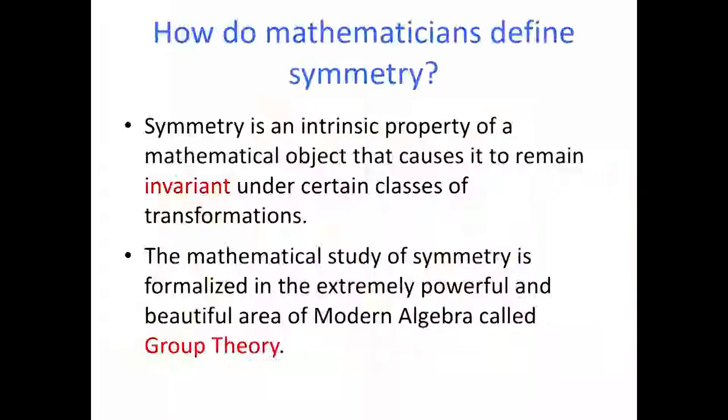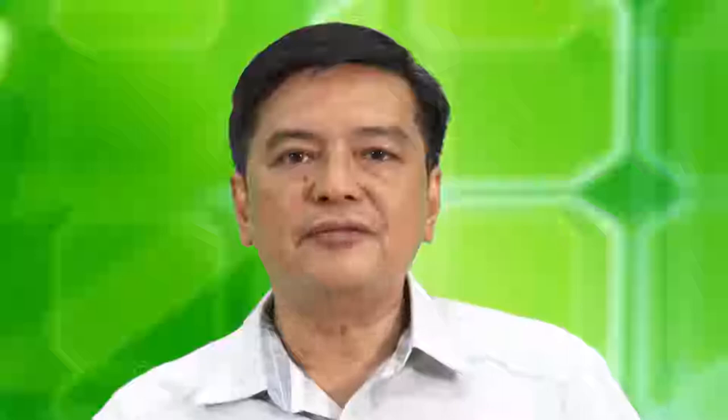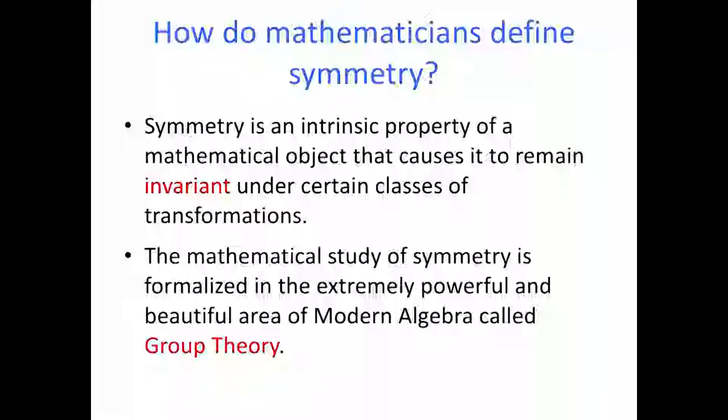But mathematicians define symmetry in a more technical or precise way. Symmetry is an intrinsic property of a mathematical object that causes it to remain invariant under certain classes of transformations. So when you see a picture that's symmetric, it's because a certain transformation — for instance a reflection — leaves the picture exactly the same as the original. The mathematical study of symmetry is formalized in the extremely powerful and beautiful area of modern algebra called group theory.